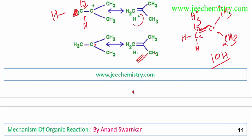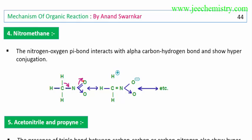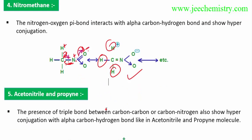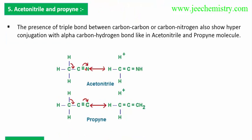Nitromethane can also show hyperconjugation. For nitromethane, we also need to think about double bonds — pi bonds must be considered. These hydrogens will shift to these positions, forming minus and plus. Three hydrogens are there, so three structures are possible. Three plus one aliphatic — total four contributing structures.